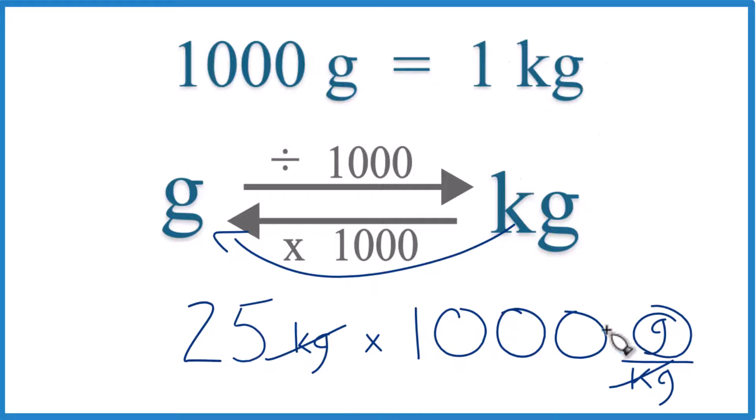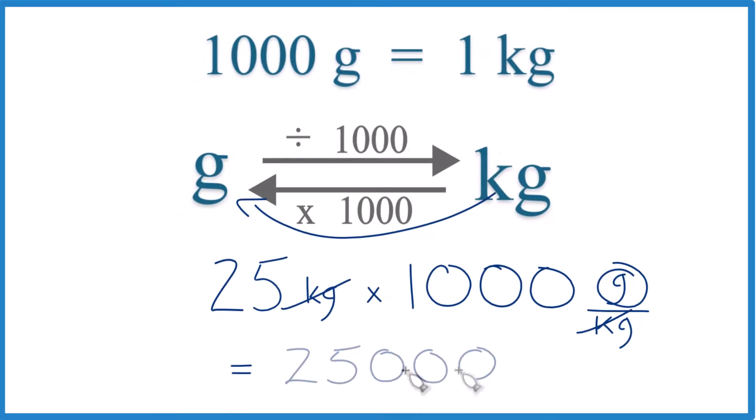So 25 times 1,000 grams, that equals 25,000 grams.